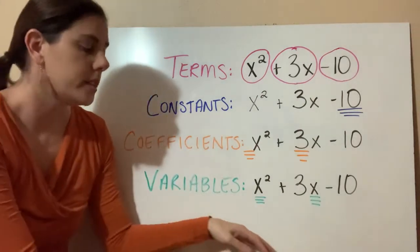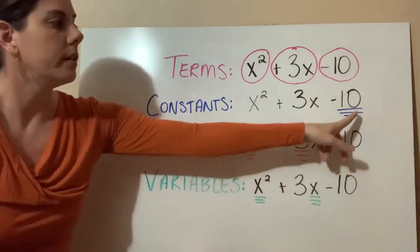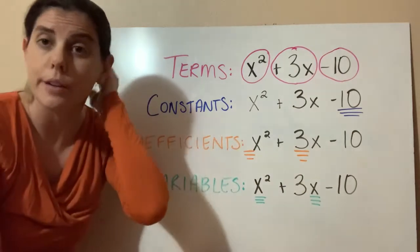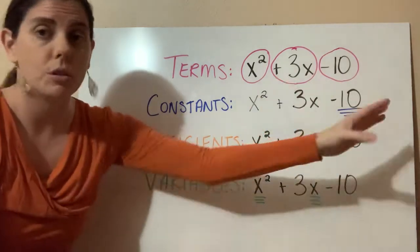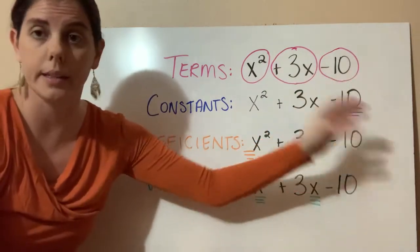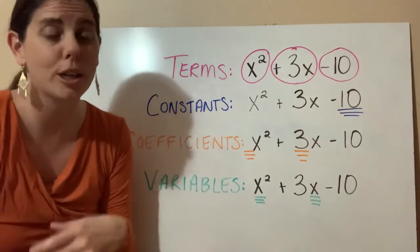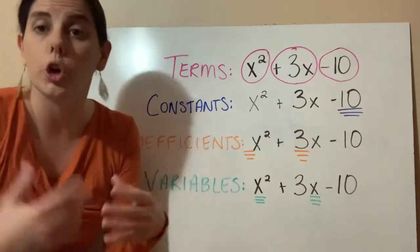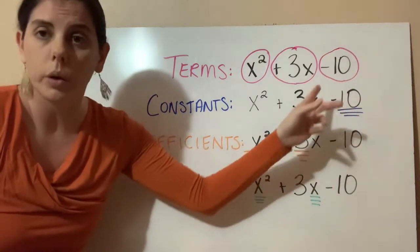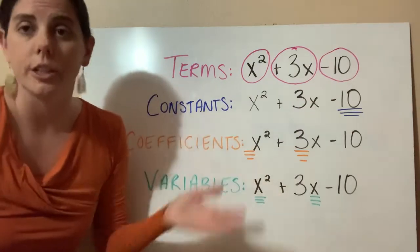Our constants are basically numbers that aren't going to change. So the negative 10 at the end is going to be our constant because there's nothing there to change it. Anytime you do anything with this 10, it's just always going to be a 10 — it's a constant. It could be a fraction, a decimal, an irrational number which we'll learn in math 2, a whole number, a counting number, an integer, or any real number that isn't going to change.